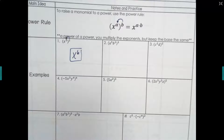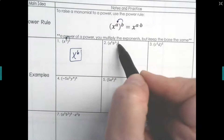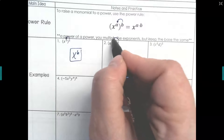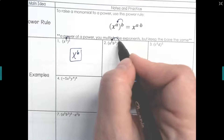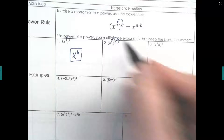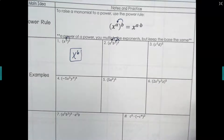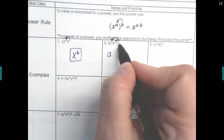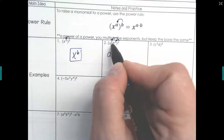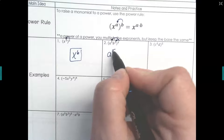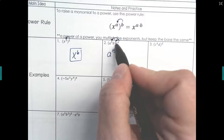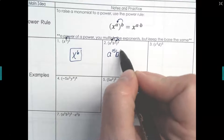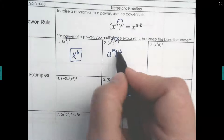Let's try it again. The exponent gets distributed to every exponent inside, even if it's a one. So we're going to multiply it to both of those. We have a — that's to the fifth — being raised to a three, so five times three is 15. Then b squared: two times three is six, so b to the sixth.